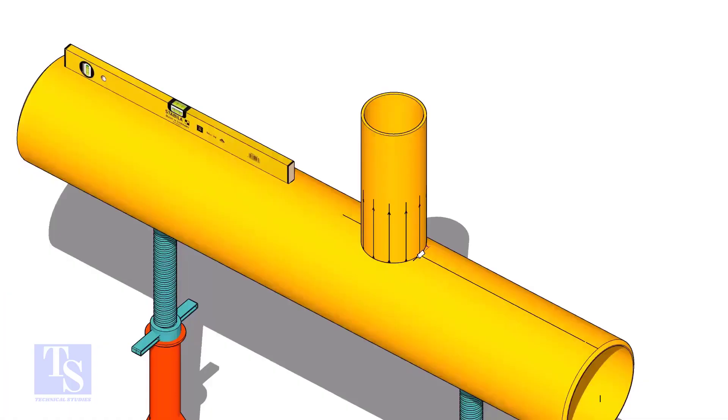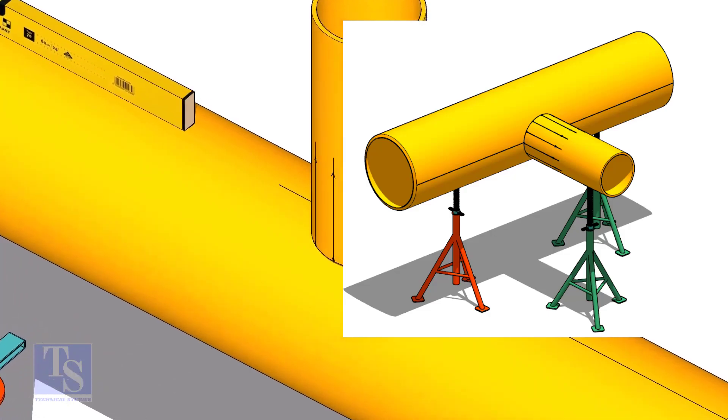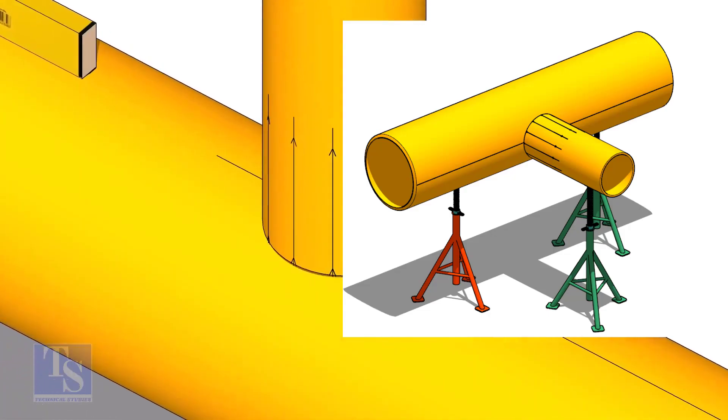Tack weld the branch on the header just to stand it vertically. If the pipes are large, you can do it in the horizontal position also.